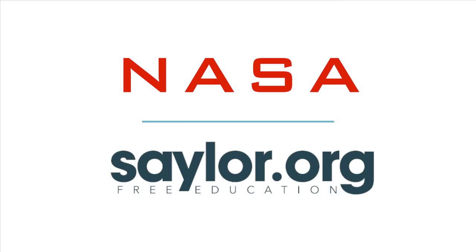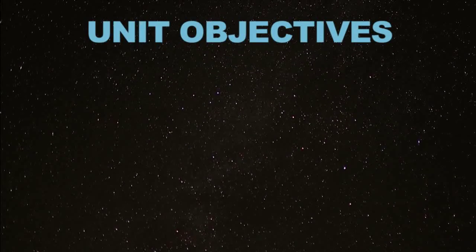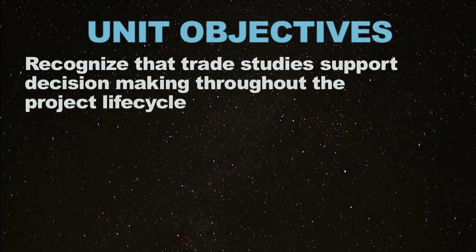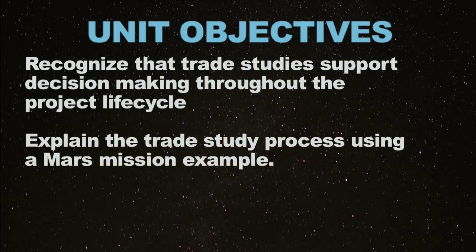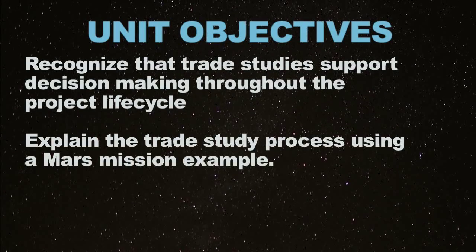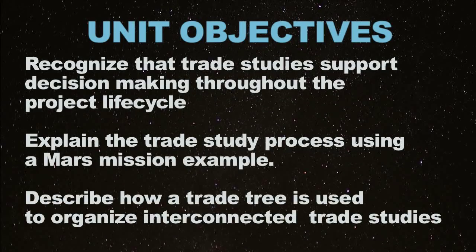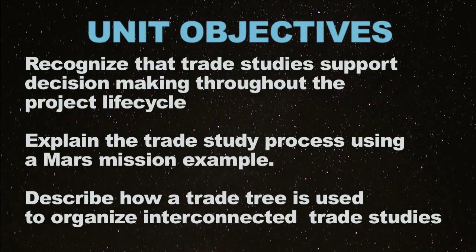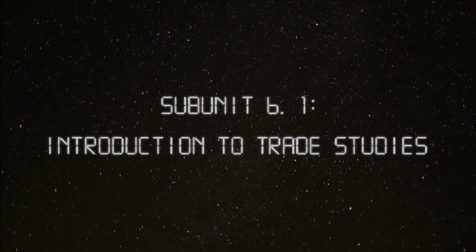Welcome to the sixth unit of the NASA and Sailor Foundation Space Systems Engineering online course: Trade Studies. The unit objectives for Unit 6 are to recognize that trade studies support decision-making throughout the project lifecycle, explain the trade study process using a Mars mission example, and describe how a trade tree is used to organize interconnected trade studies.